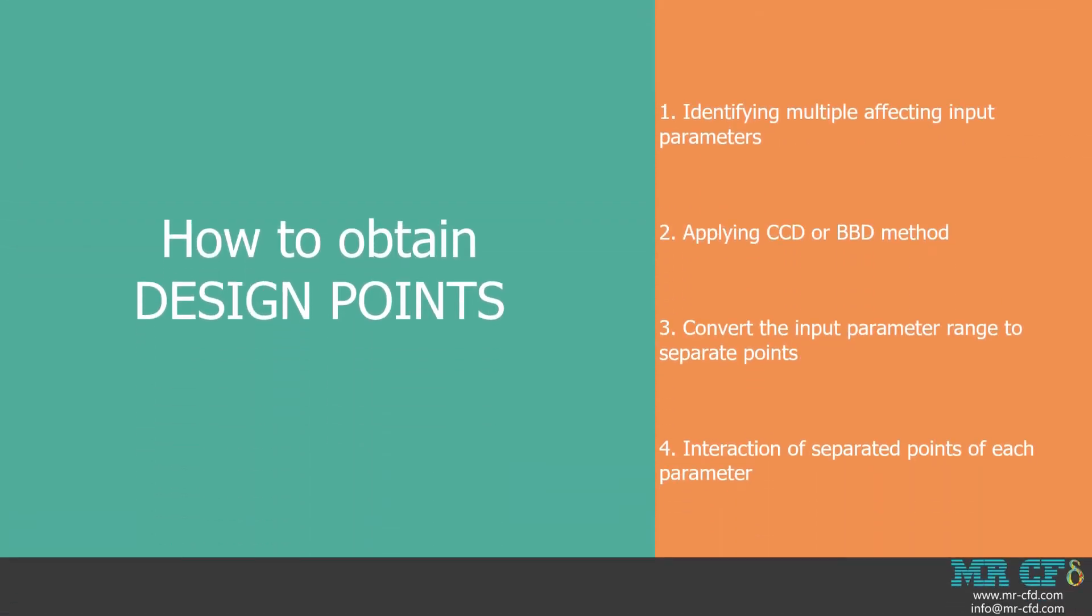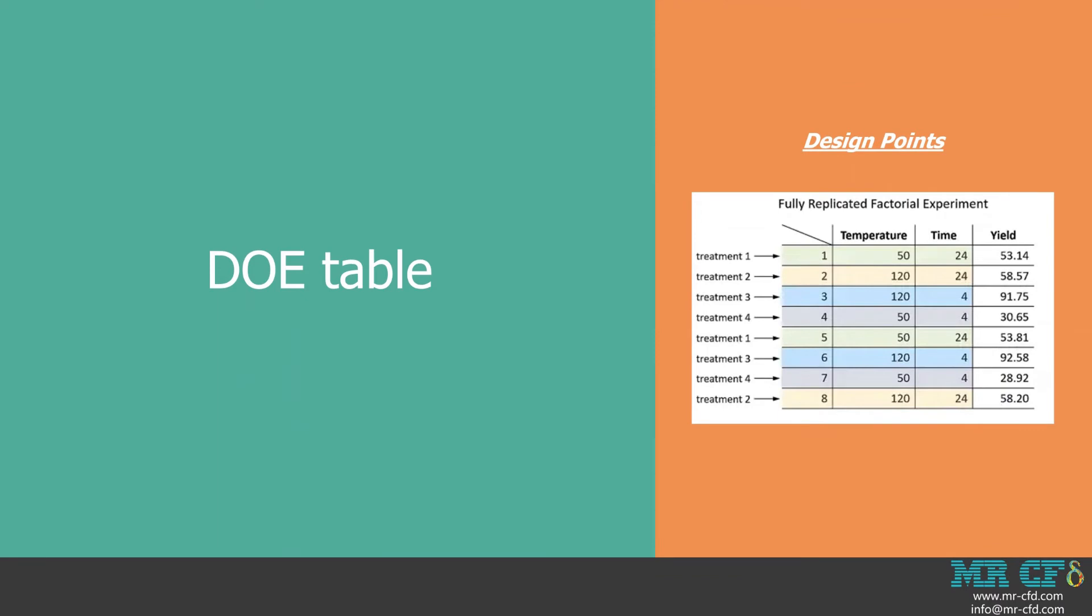In simple terms, we first consider multiple affecting input parameters for a system. Then, using the CCD or BBD methods, we turn the defined range for each input parameter into separate points and combine the separated points of each parameter to obtain a design point. So, the generated design points will form the DOE table. Subsequently, experiments or in our case simulations are conducted to obtain answers for the defined targets. Finally, the RSM method uses machine learning algorithms to get a mathematical function that predicts the system response due to the change in input parameters for cases that have not been investigated.